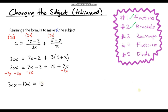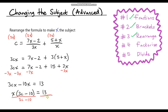Now we've rearranged because we've got all the x's together, but we do need to factorise since we still have two instances of x. So we factor out an x, giving us x times (3c minus 10) on the left and 13 on the right. We're almost done — we just need to get x on its own. So we divide both sides by 3c minus 10. That leaves us with x on the left, and x equals 13 over 3c minus 10 as our final answer.